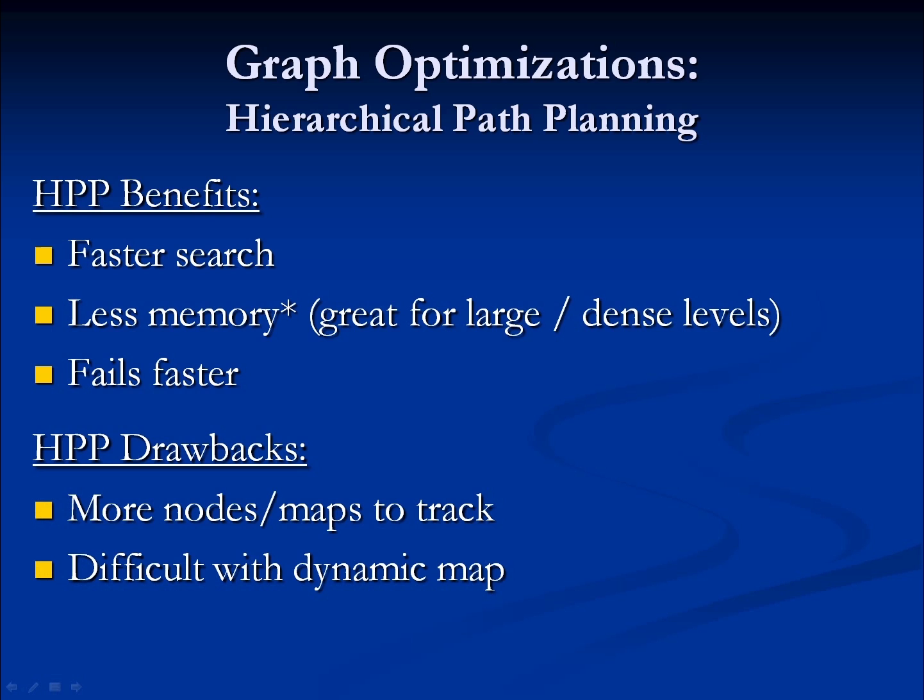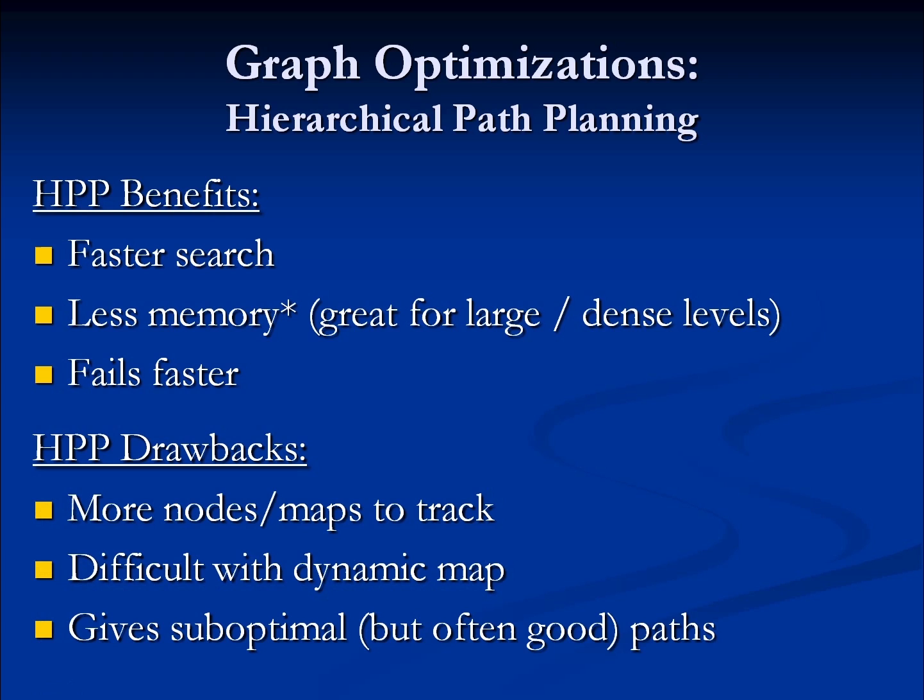Hierarchical path planning can also produce suboptimal paths. This is because the higher-level searches define which nodes are used for the lower-level searches, which may not always yield the perfect path. However, in most cases the results are good enough — not necessarily optimal, but decent enough to look believable for your AI agents.